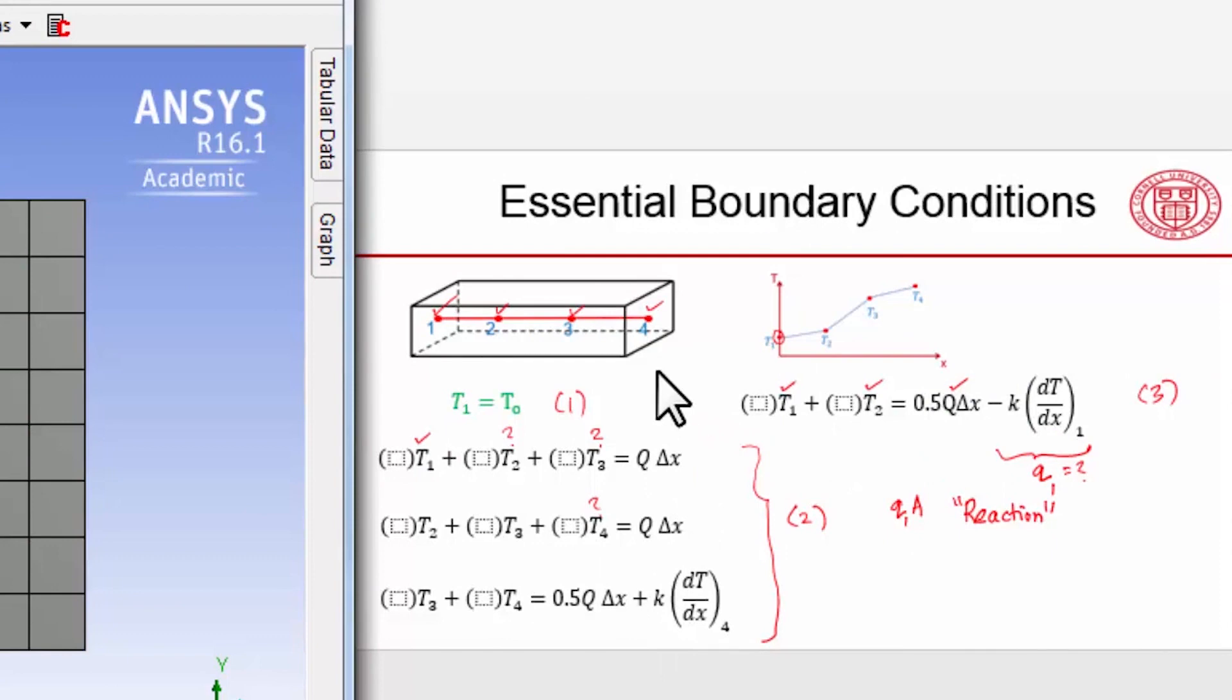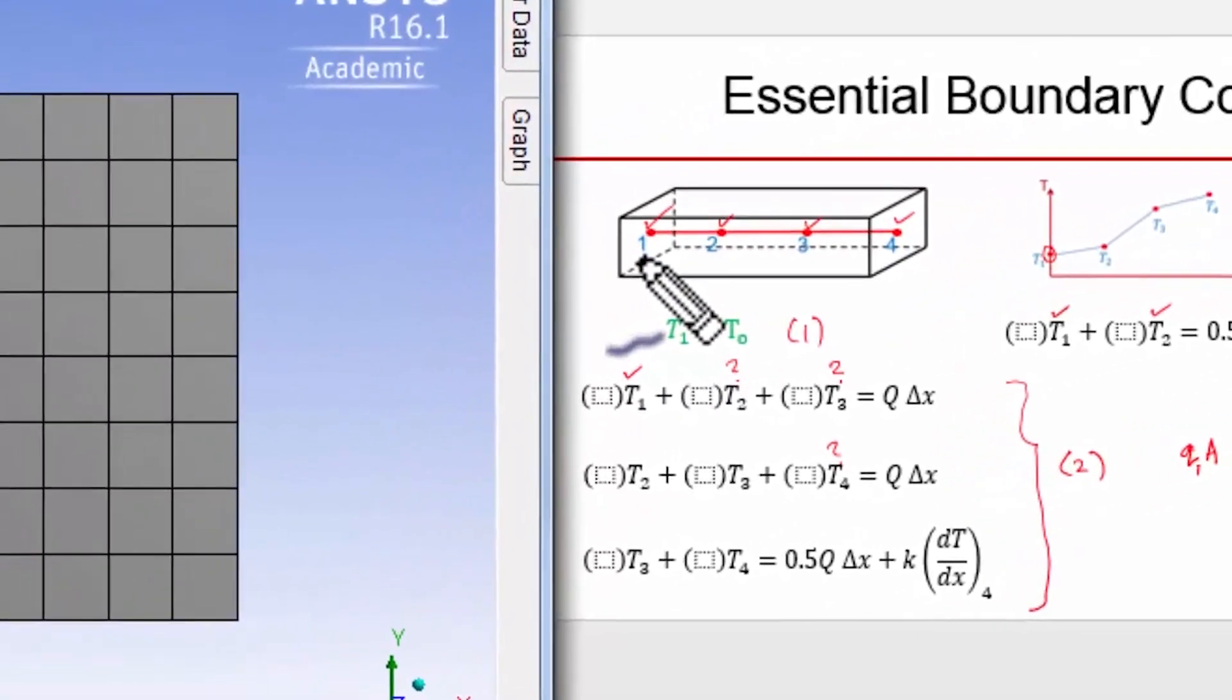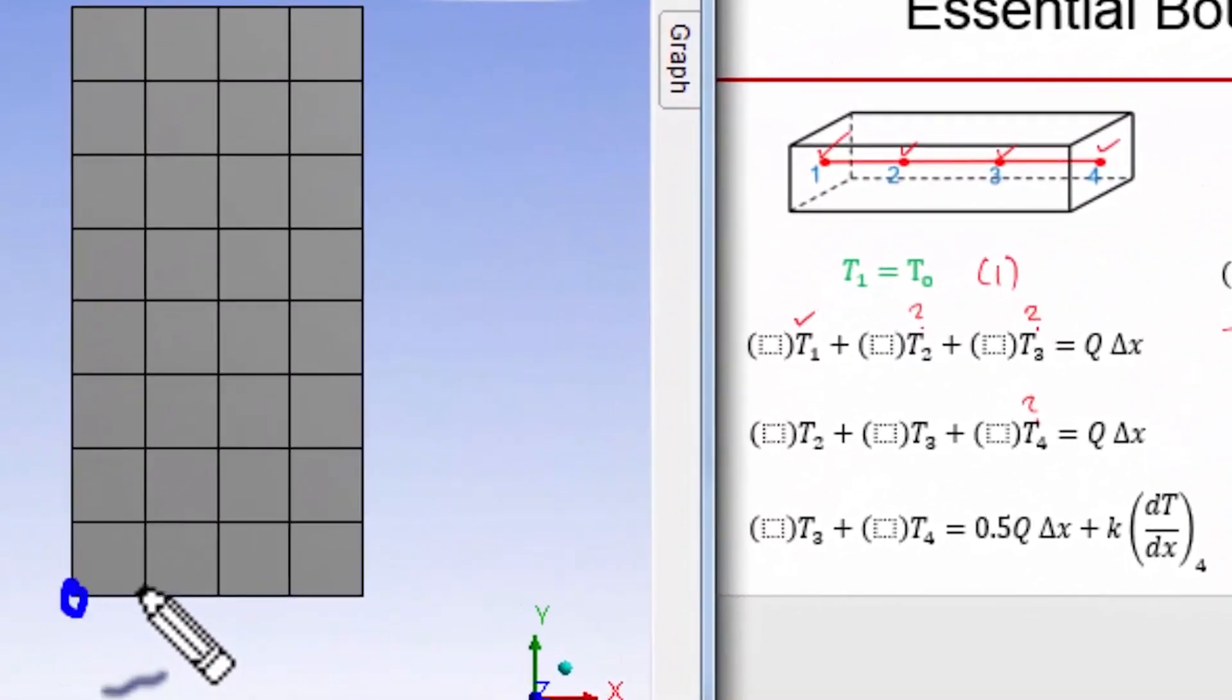Let me annotate my ANSYS model. The first step is to assign the temperature values for the nodes at which we have an essential boundary condition. We have these nodes - the corner nodes here.